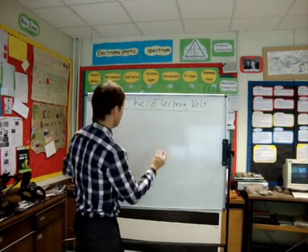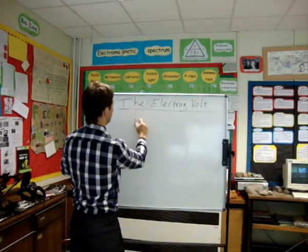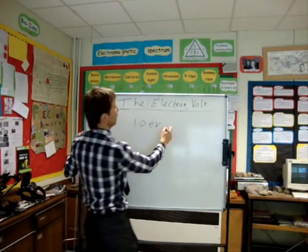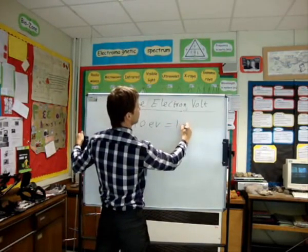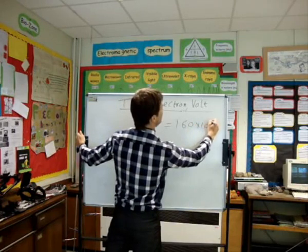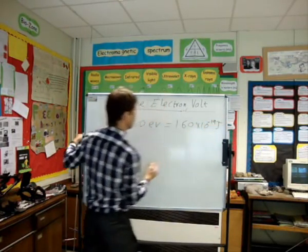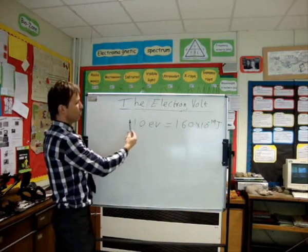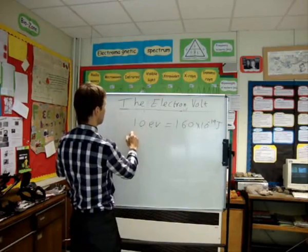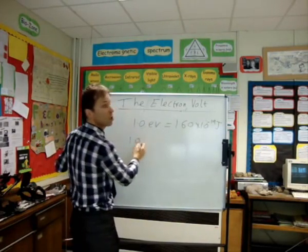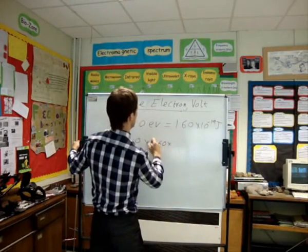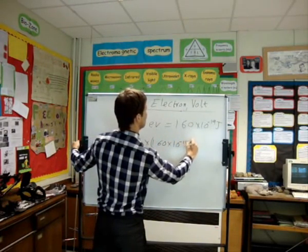Hopefully you worked out that if you want 1 electron volt equals 1.60 times 10 to the minus 19 joules, what we need to do is we need to times it. So it's just like basically 1 times 1.60 times 10 to the minus 19.